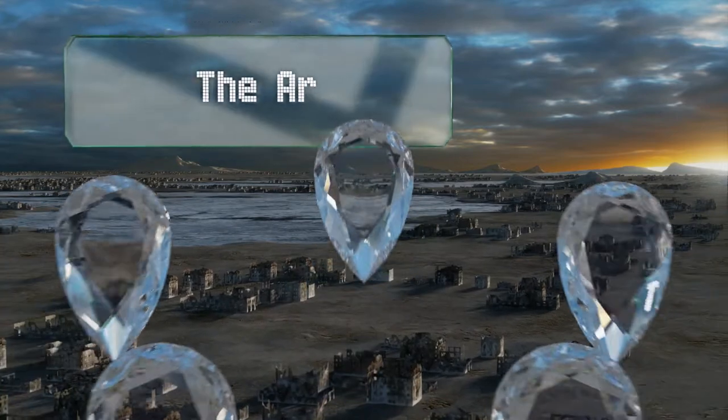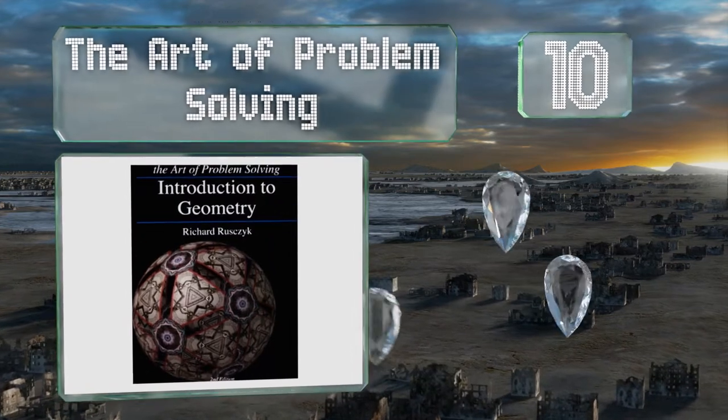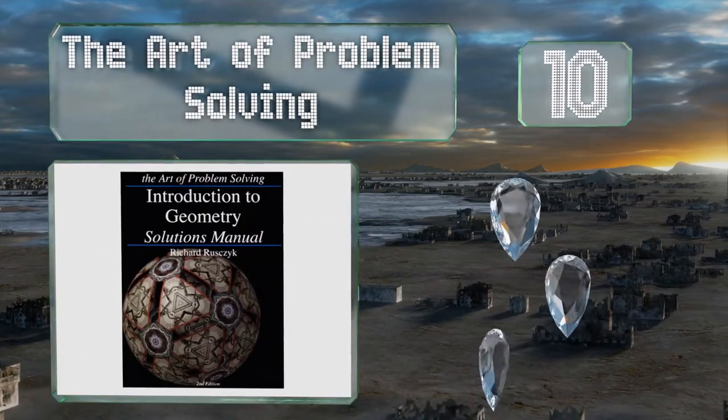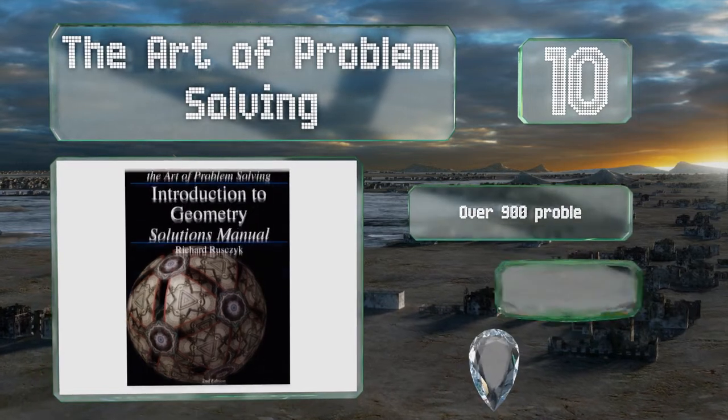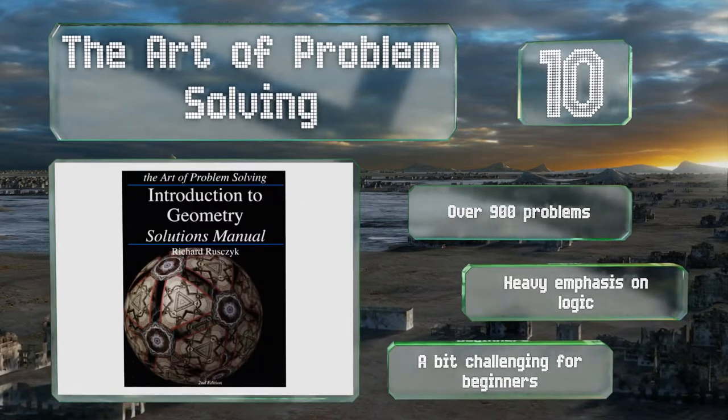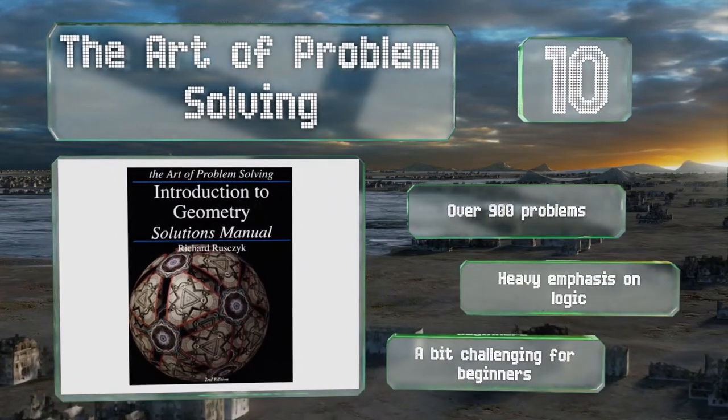Starting off our list at number 10, written by a Mathematical Olympiad winner, The Art of Problem Solving consists of an introductory book and a solutions manual that serve as a complete course ideal for the industrious student. Each section begins rather than ends with a problem, so it's truly engaging. It contains over 900 problems and has a heavy emphasis on logic. However, it's a bit challenging for beginners.